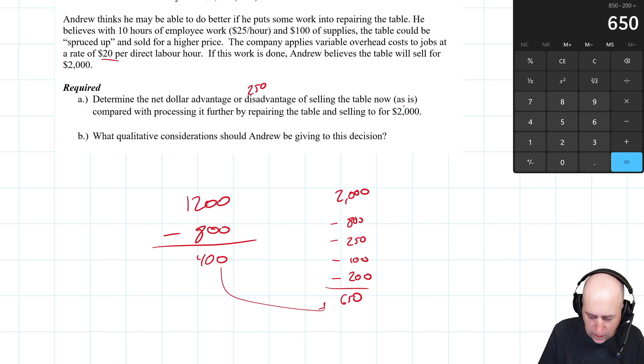To sell now. Processing further is a $250 better decision as far as this number crunch goes.